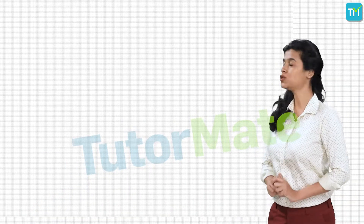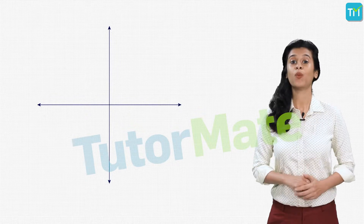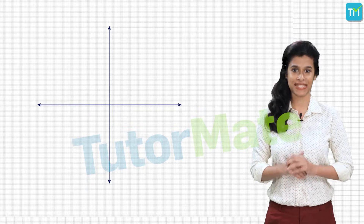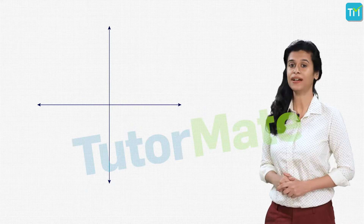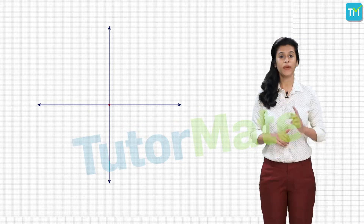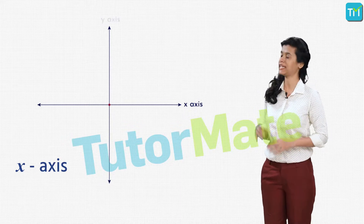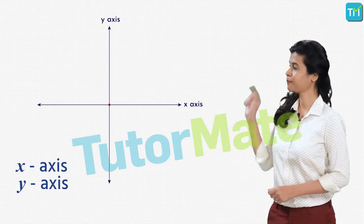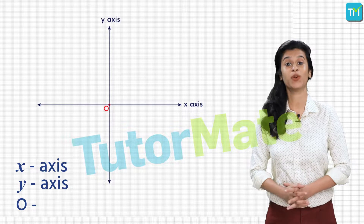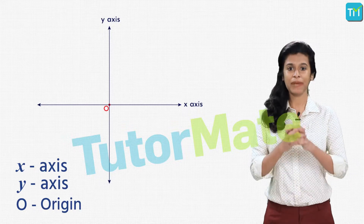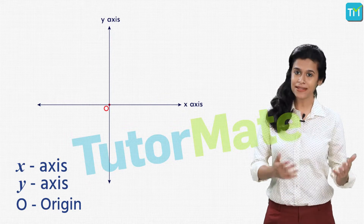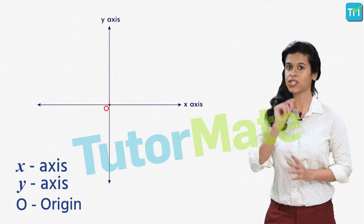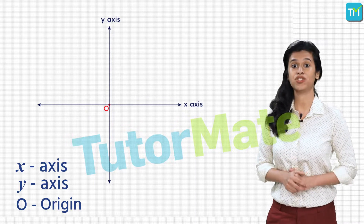We'll first draw two lines perpendicular to each other — one line perfectly horizontal and the other perfectly vertical — such that they intersect at a point. We'll call the horizontal line the x-axis and the vertical line the y-axis, and we'll denote the point where they intersect with the capital letter O, known as the origin. The origin marks the beginning of the coordinate system.